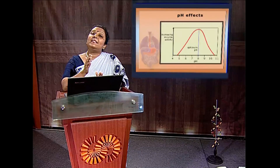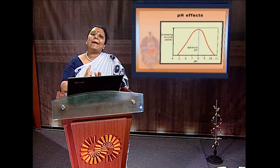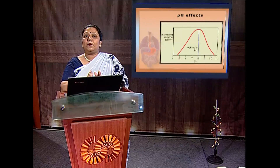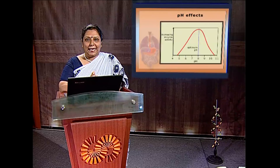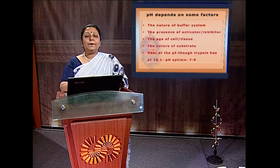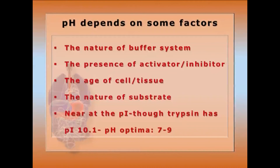Km is the Michaelis constant for substrate affinity and Vmax is the maximum velocity dependent on substrate saturation. pH optima depends on the nature of the buffer system, the age of the cellular tissue, the presence of activators/inactivators, and the nature of the substrate. pH optima is near the pI isoelectric point. For trypsin, the pI is 10 though the pH optima is 7–9, and its operational range is 2.5 to 11.